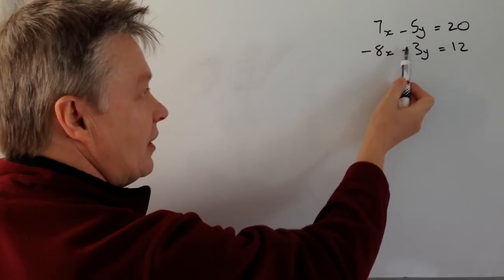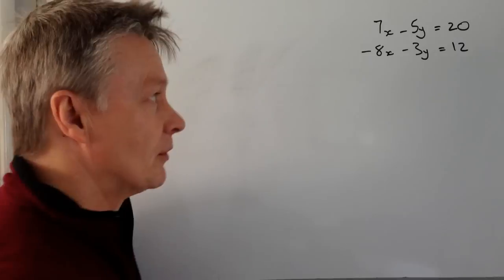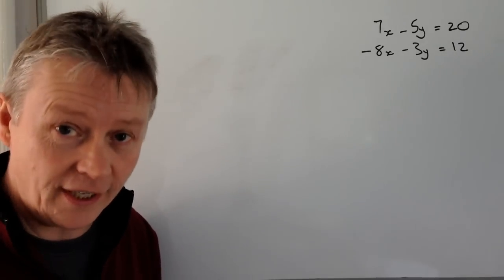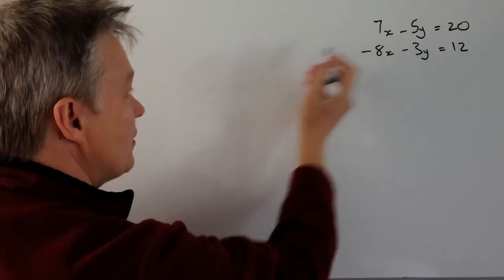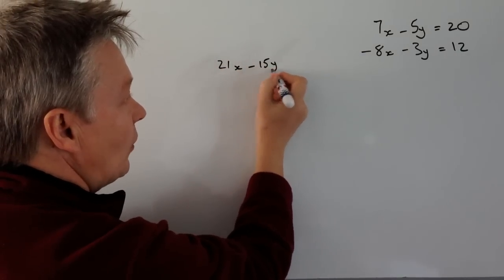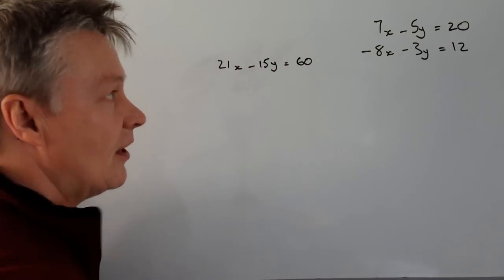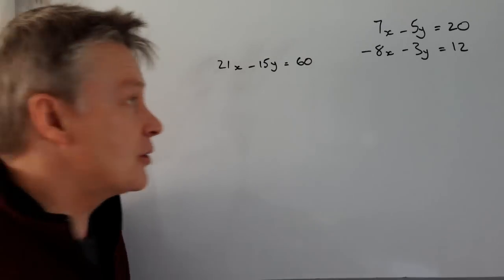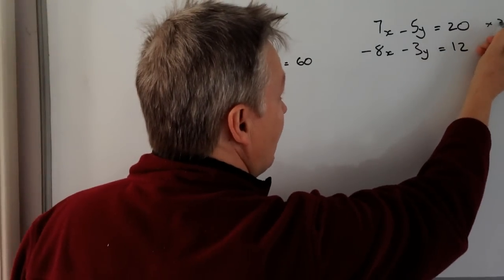But what we're going to do with these two is the first one I'm going to multiply through by 3. Now if I do that, it means I get 21x minus 15y equals 60. So I've taken the first equation, I've multiplied it by 3.